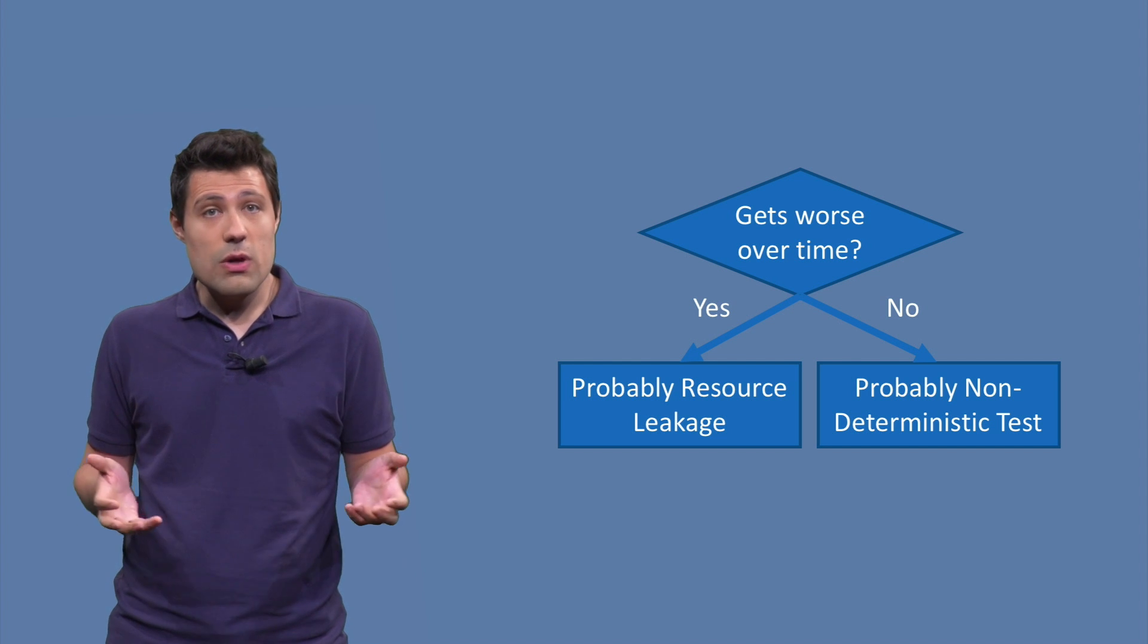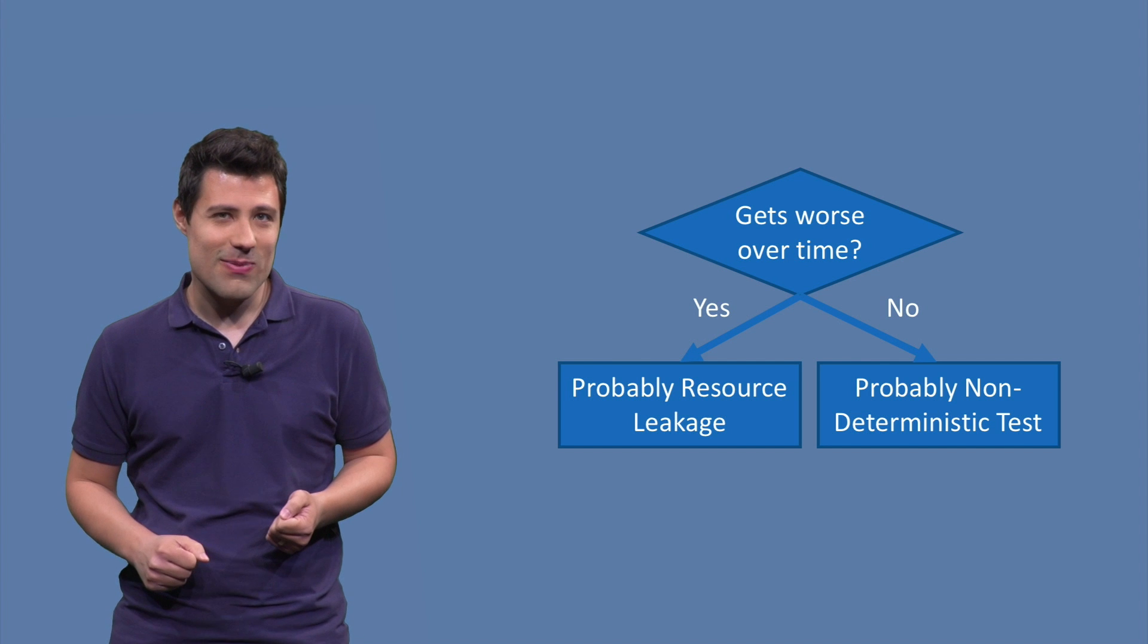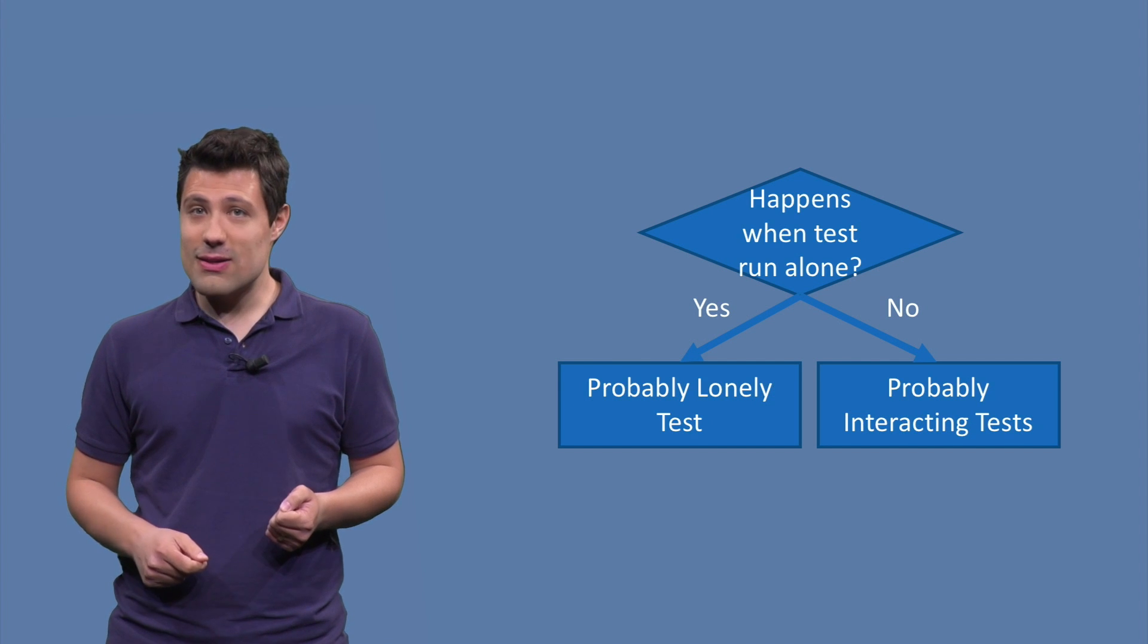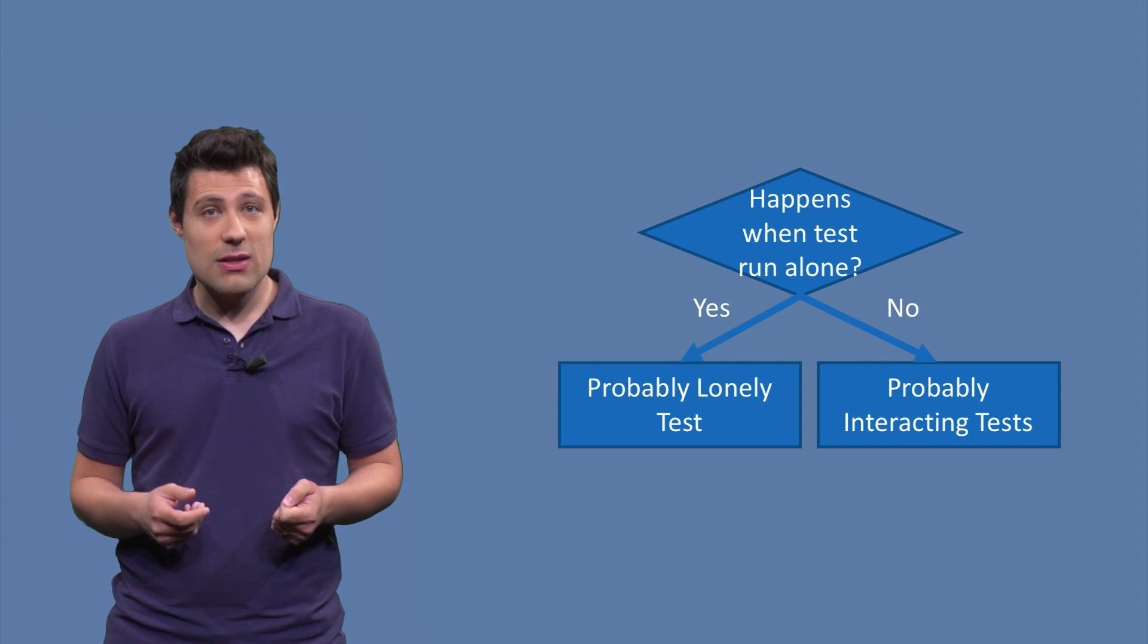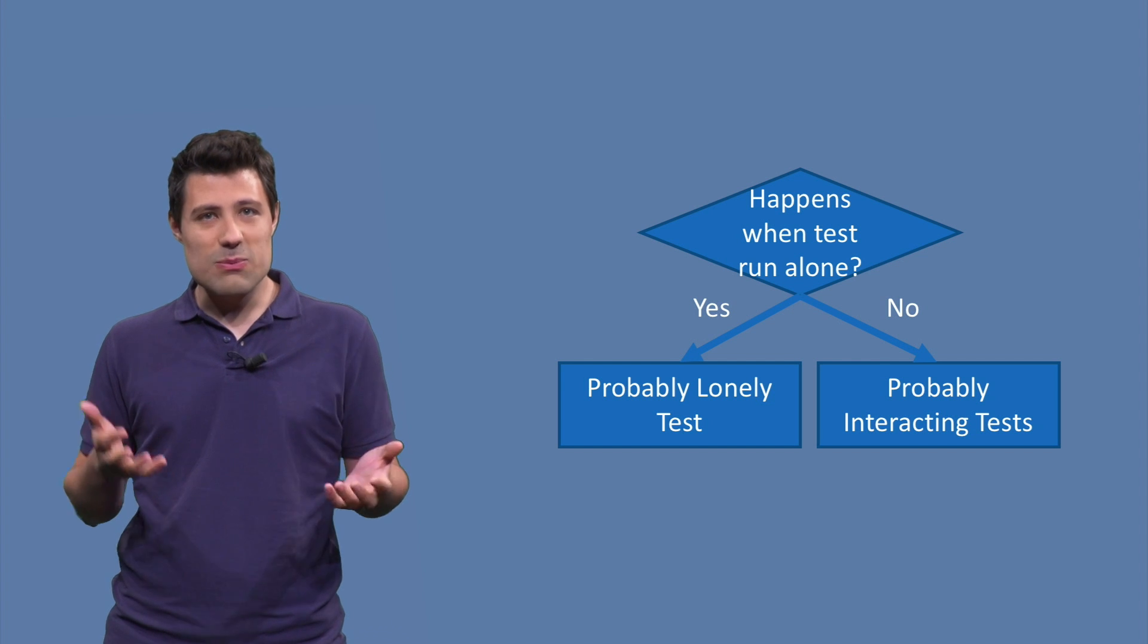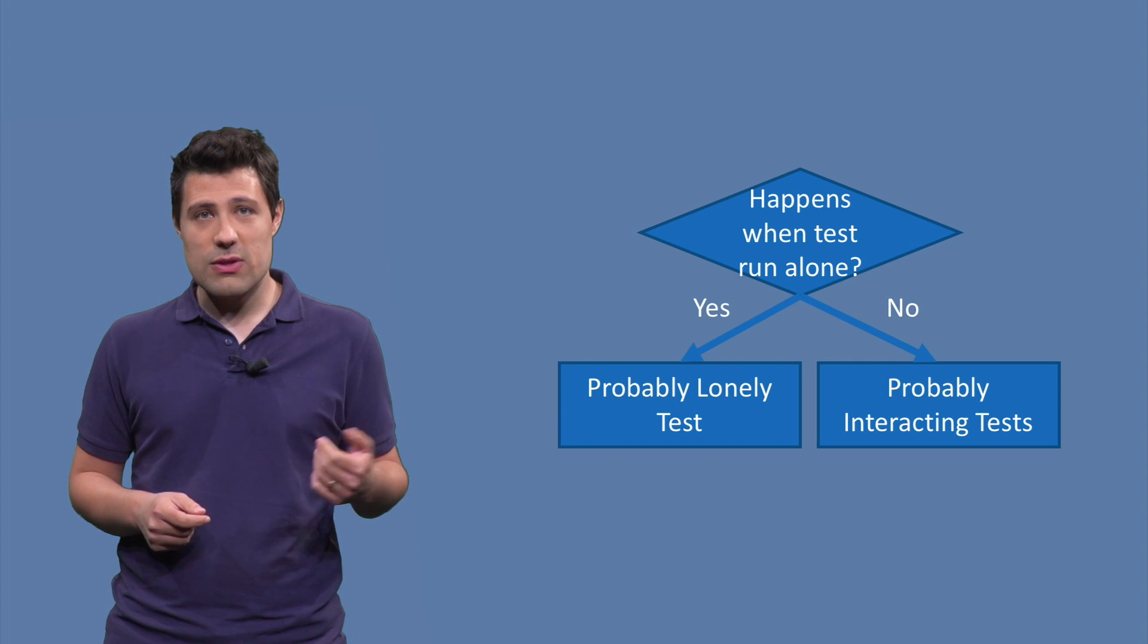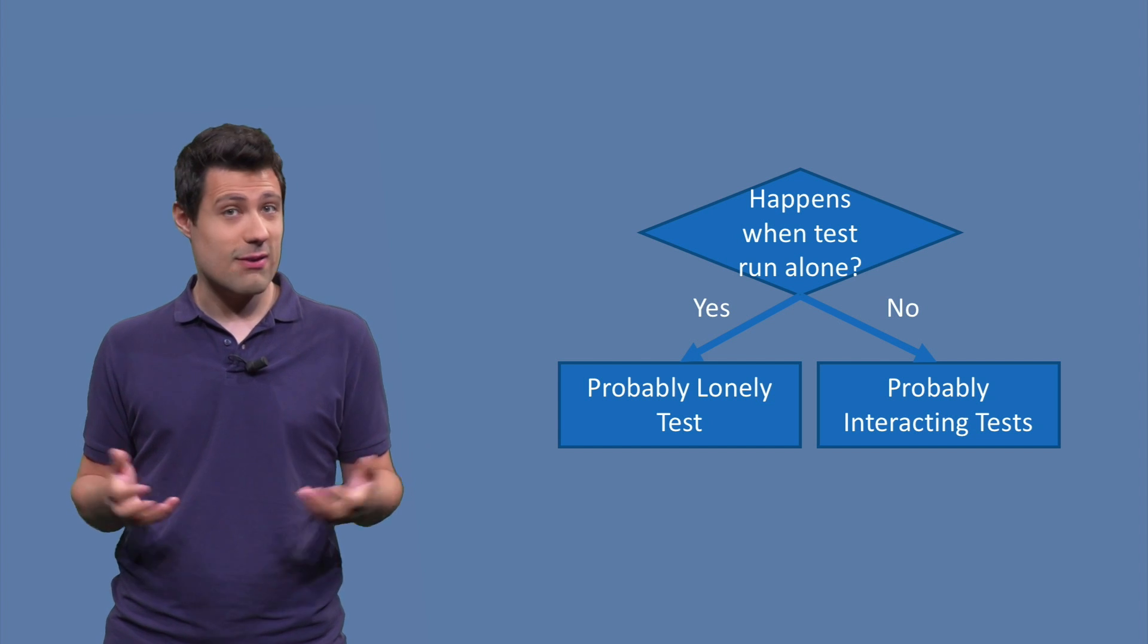And if this is not true, you probably have a non-deterministic test. Does it happen when the test is executed alone? If so, then you probably have a lonely test, which is a test that only works when executed alone, probably because it depends on some state that is created by previous tests. If not, then you probably have tests that are interacting with each other.